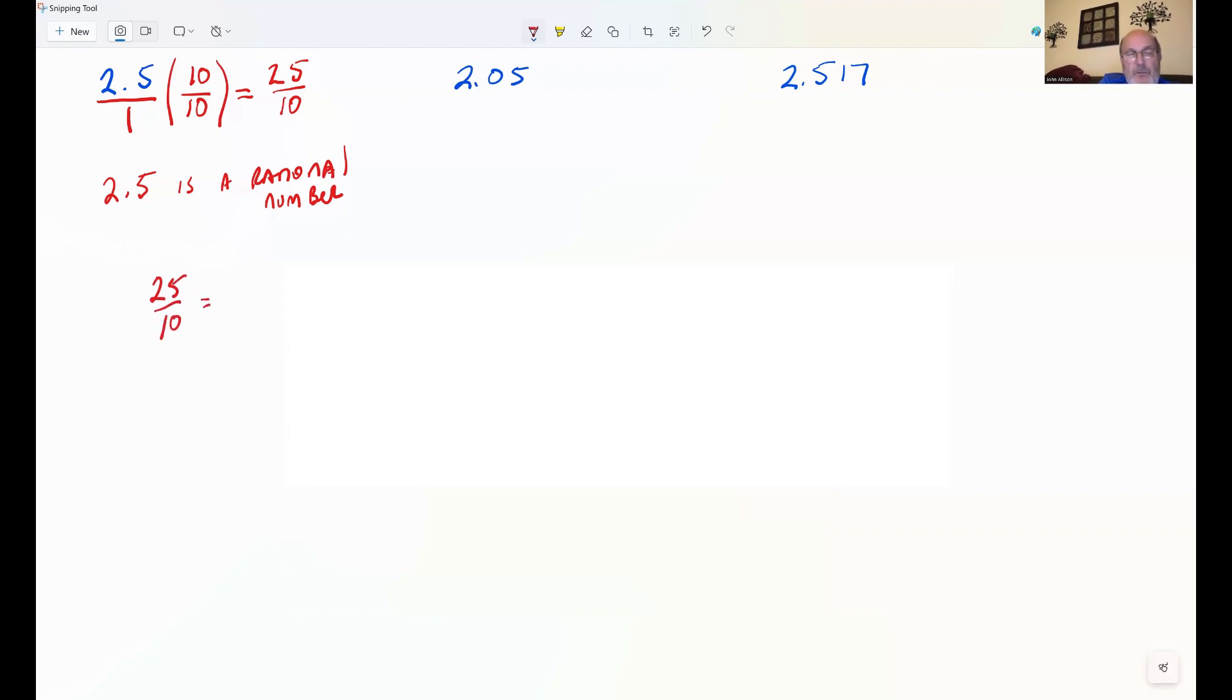To do that, we're going to completely factor the numerator into prime numbers. Cancel common factors. Again, the same reason 5 divided by 5 is 1. That's why common factors cancel.